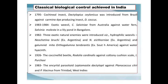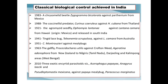Some classical biological control examples in India: cochineal insects were introduced from Brazil to control carmine dye-producing insects. In 1982, three exotic natural enemies were introduced for weed control. In 1988, a coccinellid predator was introduced from Thailand into India for the control of different sucking pests. These are some of the well-planned and successful classical examples of biological control.